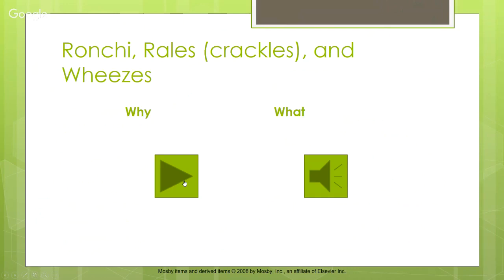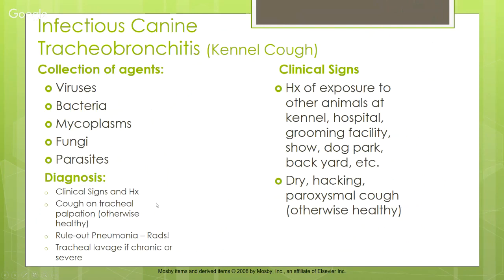When breathing sounds funny on expiration, that indicates lower airway disease. Wheezes are high-pitched sounds heard when air moves through very small spaces due to bronchoconstriction. These different sounds — ronchi, rails/crackles, and wheezes — can be heard via the linked audio icons to help you recognize abnormal sounds when listening to an animal.